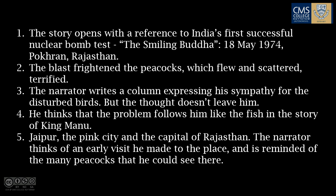Number three: the narrator writes a column expressing his sympathy for the disturbed birds, but the thought doesn't leave him. Point number four: he thinks that the problem follows him like the fish in the story of King Manu — Lord Vishnu came to Manu as a small fish, and Manu tried to protect it, but the fish began to grow bigger and bigger. And point number five: we now move to Jaipur, the pink city and the capital of Rajasthan. The narrator thinks of an early visit he had made to the place, and is reminded of the many peacocks he could see there.